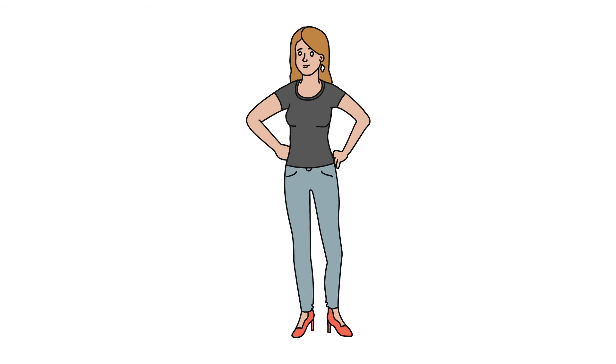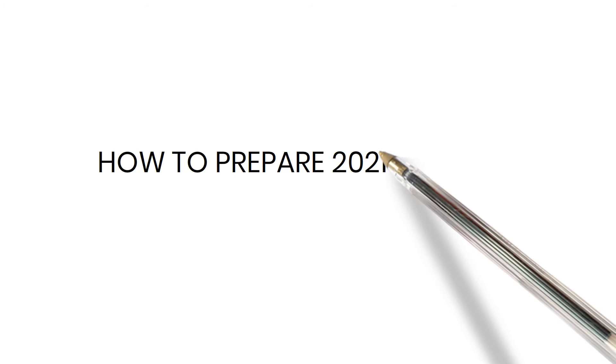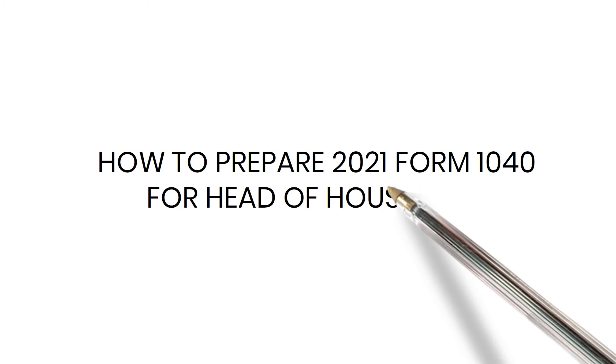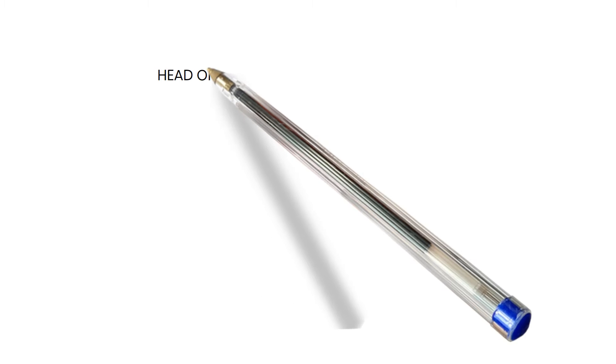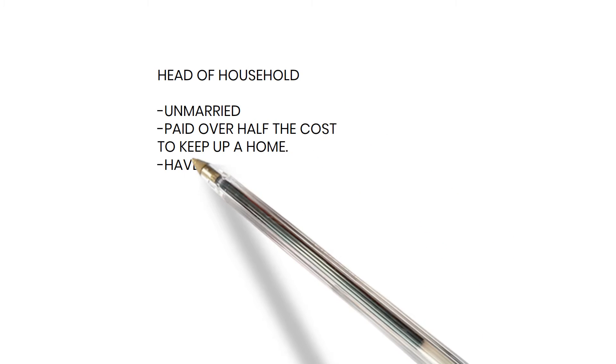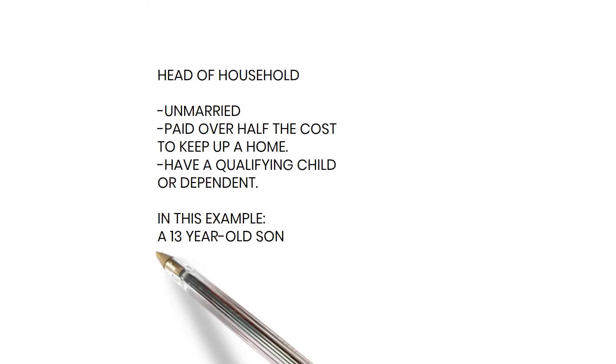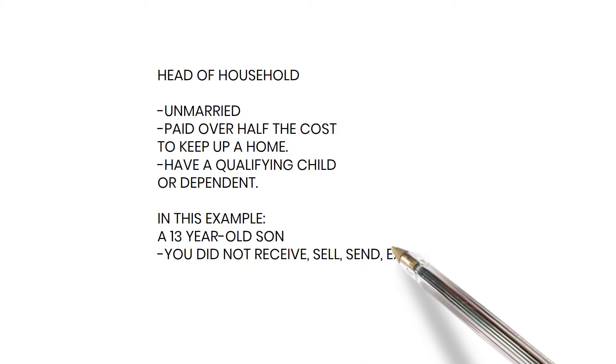I am from How To Taxes and I'm here to help you prepare your Form 1040 when you are Head of Household Filing Status. To be considered Head of Household Filing Status, you must be unmarried, paid over half the cost to keep up a home, and have a qualifying child or dependent.